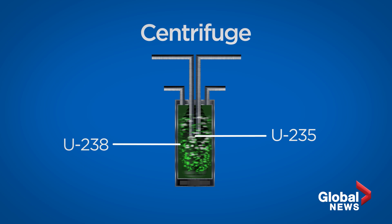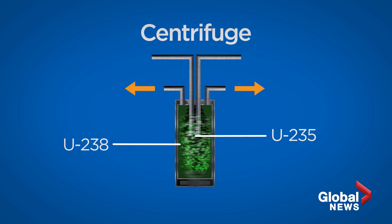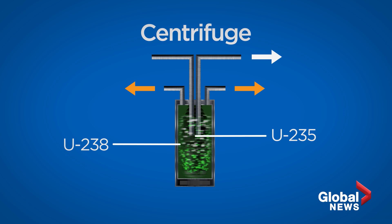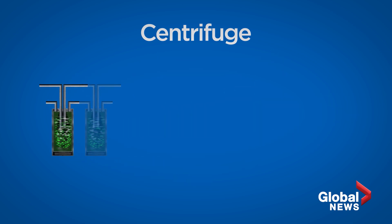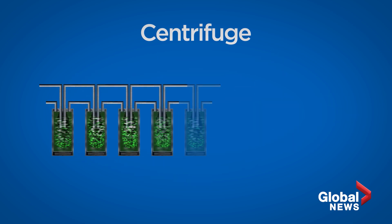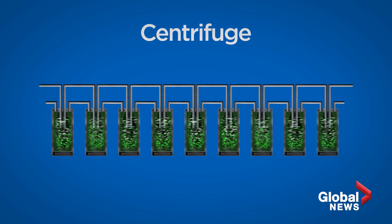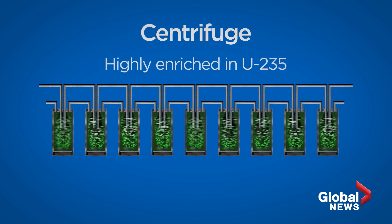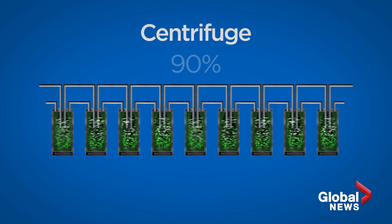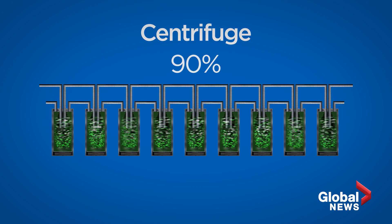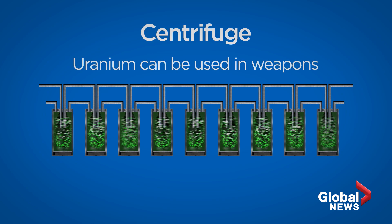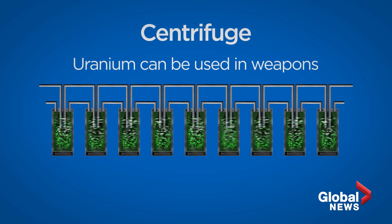The gas that's slightly depleted of U-235 is sent back to previous stages, and the gas that's slightly enriched is fed to the next stage. This is done through a cascade, which is made up of hundreds or thousands of centrifuges, until it creates a gas that's highly enriched in U-235 — about 90%. This is when the uranium can be used in weapons.